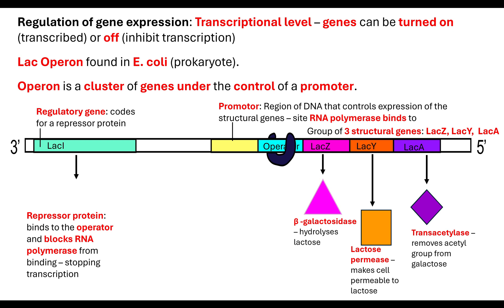If there is no lactose present and glucose is present, glucose will be the respiratory substrate of choice. That is because it takes energy to build the proteins needed to hydrolyse the lactose, to make the cell permeable, and to remove the acetyl group from the galactose — these are very energy-demanding processes. So there's no point in wasting energy building these proteins if they're not required.